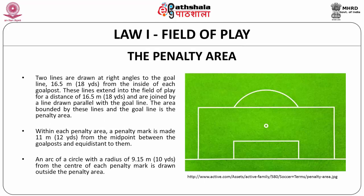The penalty area: two lines are drawn at right angles to the goal line, 16.5 meters from the inside of each goal post. These lines extend into the field of play for a distance of 16.5 meters and are joined by a line drawn parallel with the goal line. The area bounded by these lines and the goal line is the penalty area. Within each penalty area, a penalty mark is made 11.5 meters from the midpoint between the goal posts and equidistant to them. An arc of a circle with a radius of 9.15 meters from the center of each penalty mark is drawn outside the penalty area.